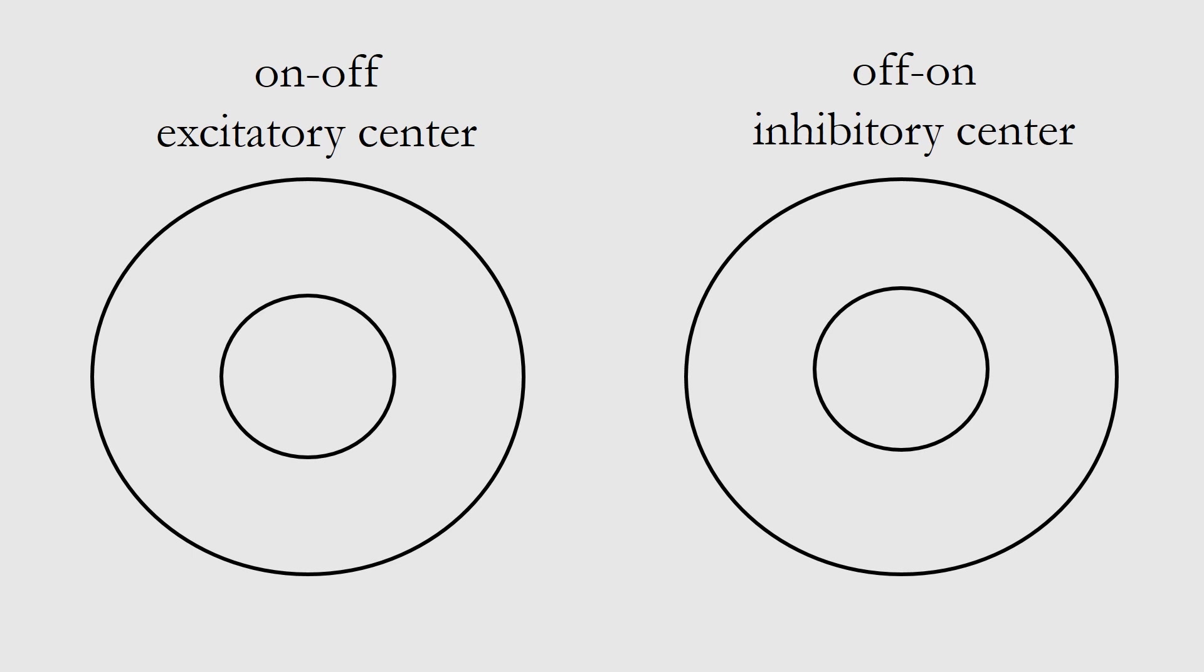For the on-off cells, if there is activation in the middle of this cell, this cell is going to be active and it's going to shoot out more action potentials. It's going to increase the rate of firing those action potentials.